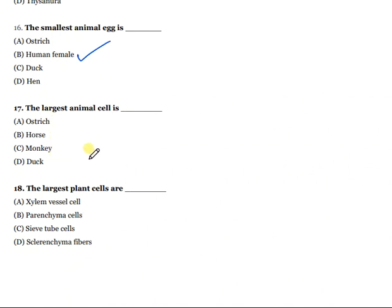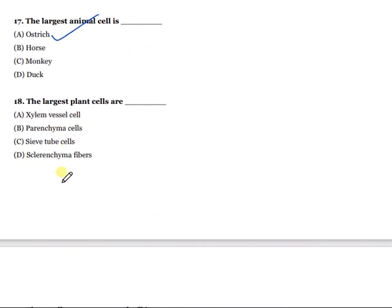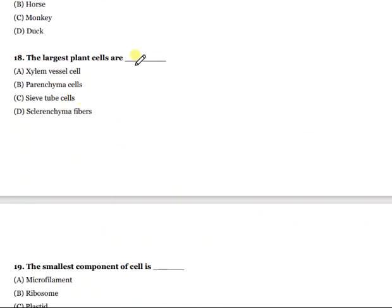Question 17: The largest animal cell — ostrich, horse, monkey, or duck? The largest animal cell is the ostrich egg. Question 18: The largest plant cells are which of the following? The right answer is sclerenchyma fibers.